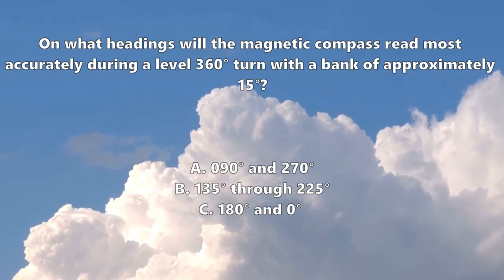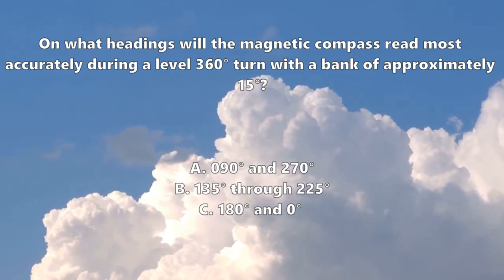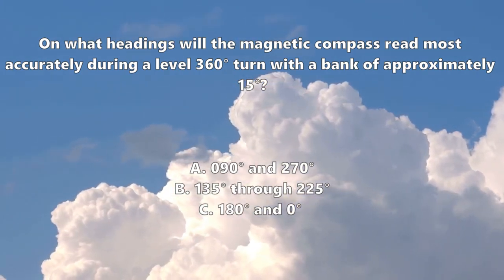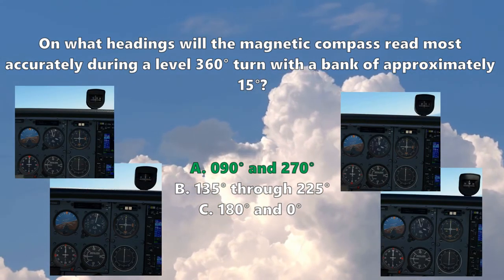So the answer to the question, on what headings will the magnetic compass read the most accurately during a level 360 degree turn with a bank of approximately 15 degrees, is A: 090 and 270.